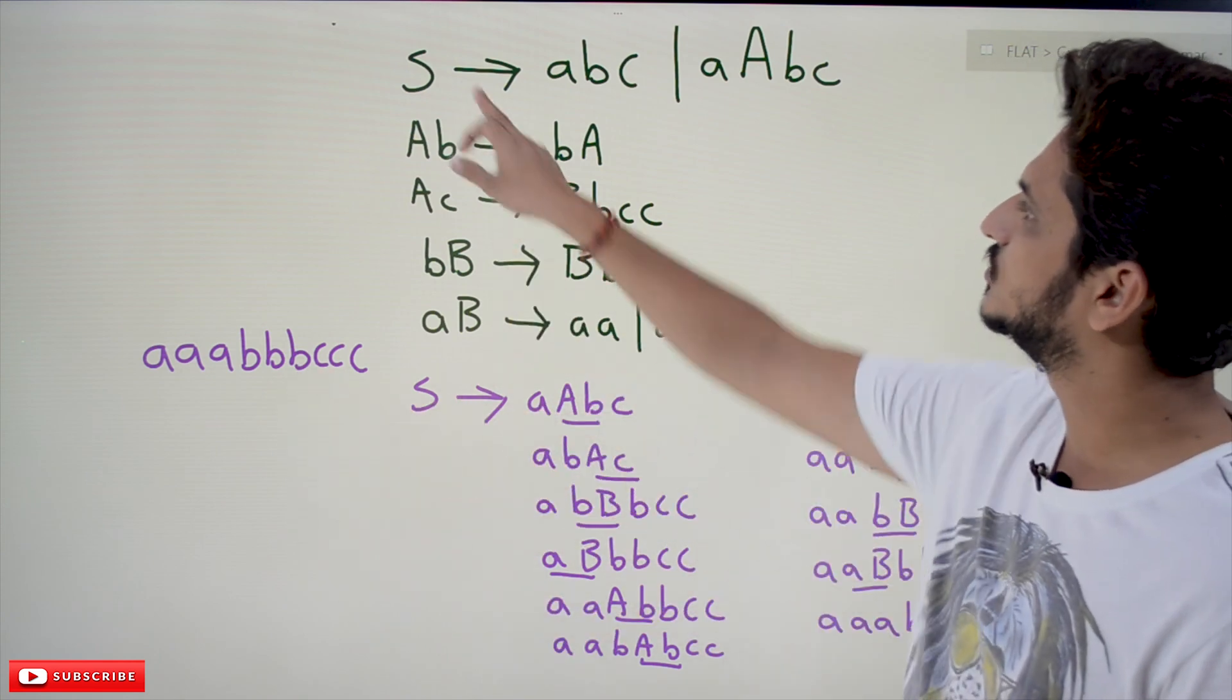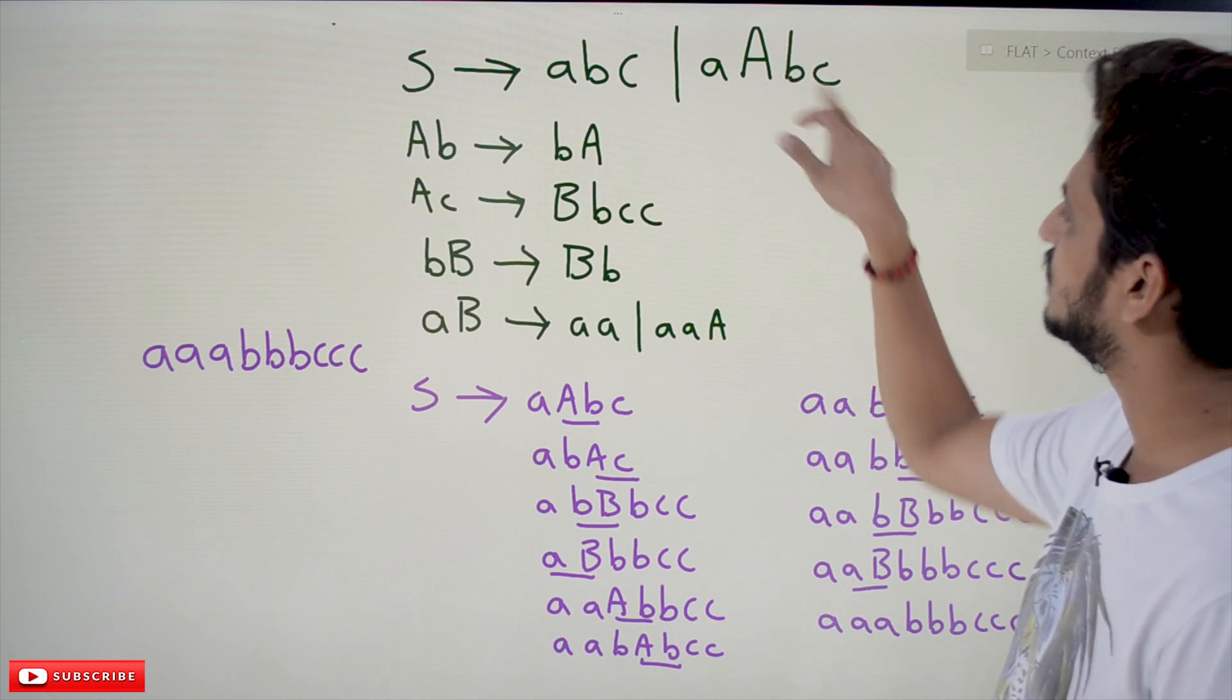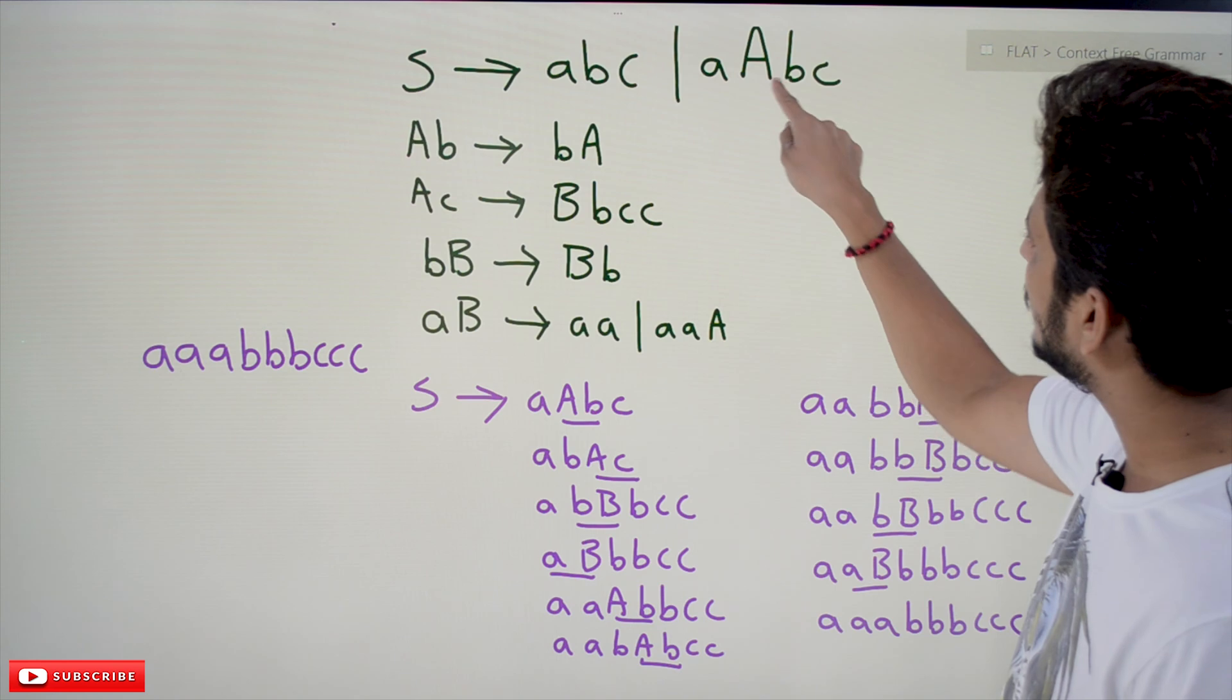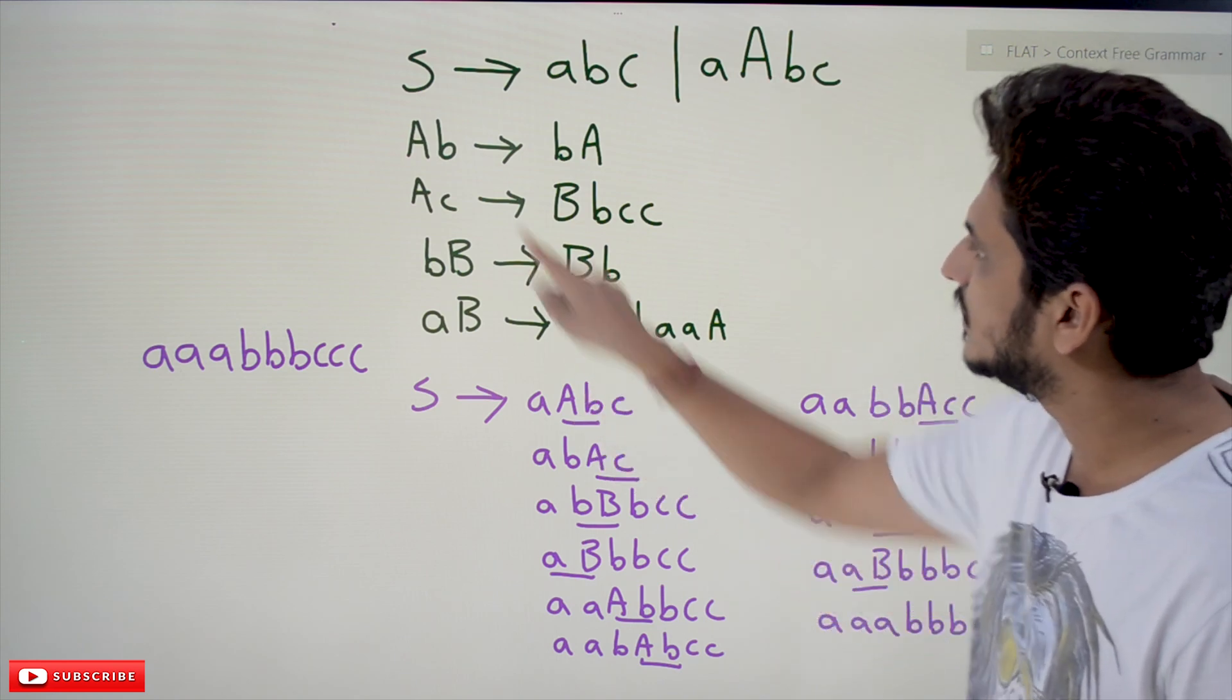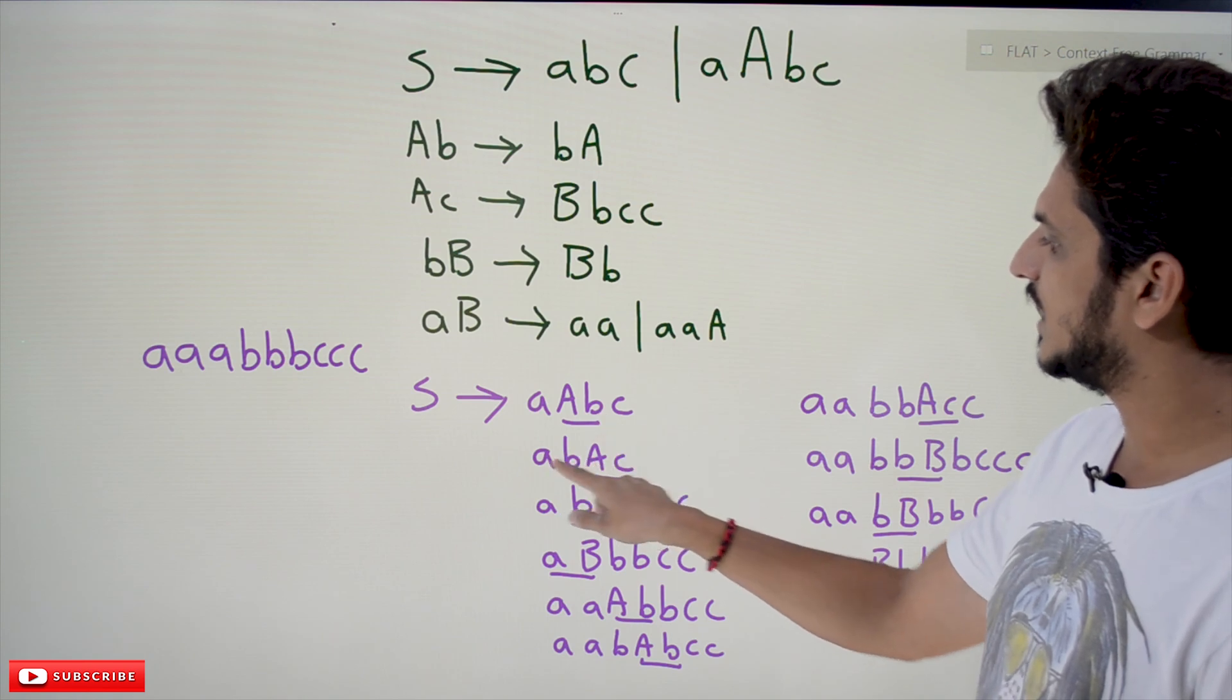S tends to abc or aAbc. We have chosen aAbc. In place of Ab, we can write bA. So we get abAc.